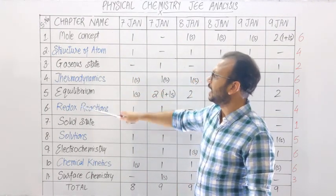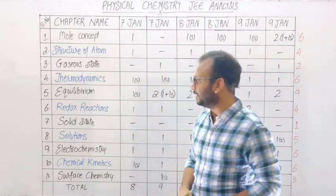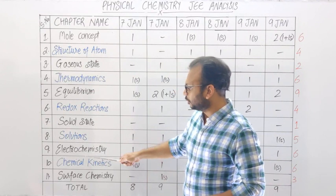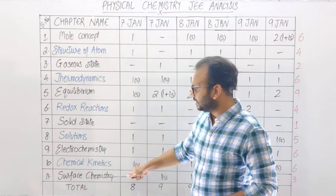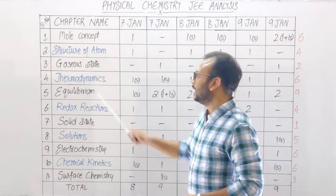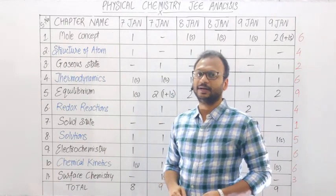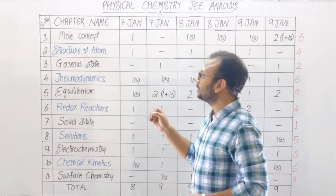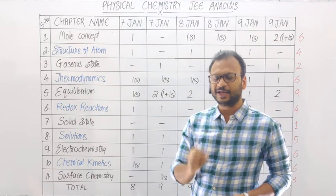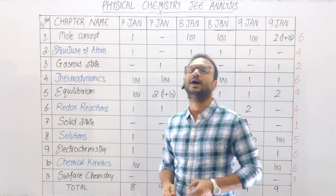There are 6 topics in the 11th course: Solid State, Solution, Electrochemistry, Chemical Kinetics, Surface Chemistry — this is the 12th part — and Equilibrium in two parts: ionic and chemical. First of all, we will see a chapter-wise analysis, then we will see more information which will be very useful.